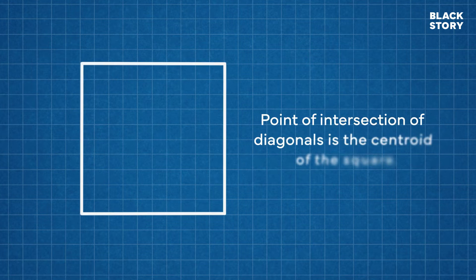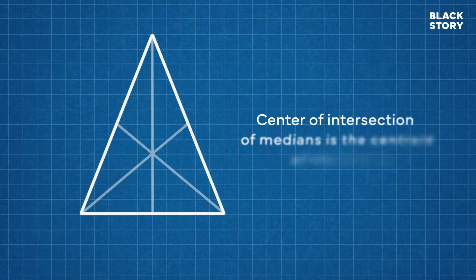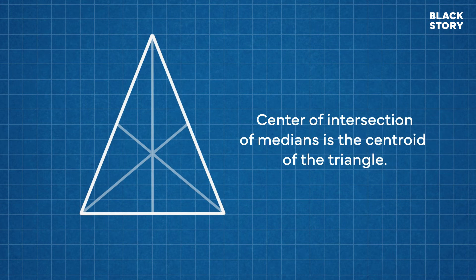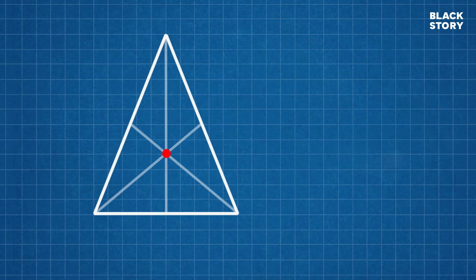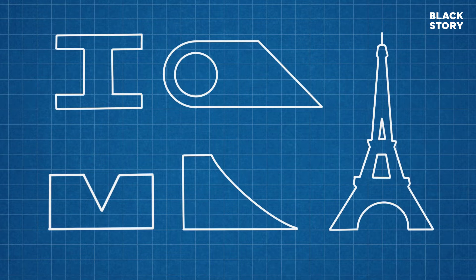Now let's take a square. The point where the diagonals of the square intersect each other is the centroid of the square. In case of the triangle, the centroid is the point of intersection of its medians. In the same way, we can find the geometric center or centroid of many complex two-dimensional geometric shapes.